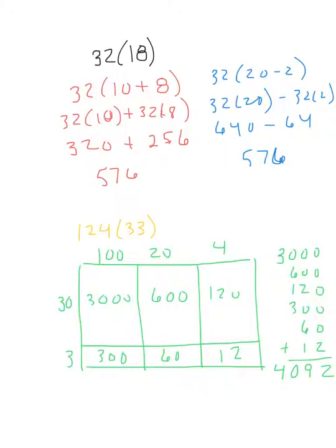So when we think about it as a partial product, we know that 10 plus 8 is 18. So 32 times 10 is 320. 32 times 8 is 256. How I did that was I did 30 times 8 was 240. 2 times 8 is 16. 240 plus 16 is 256.